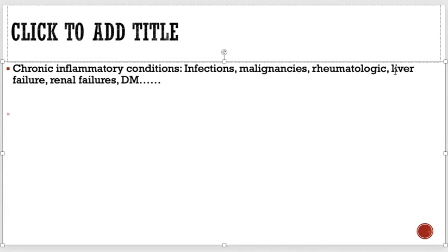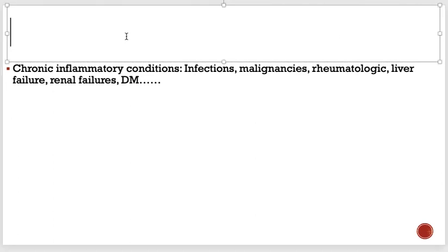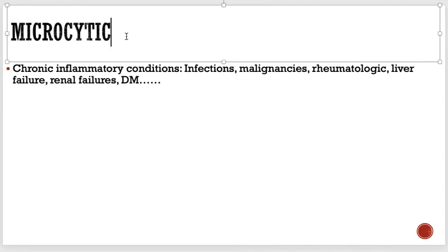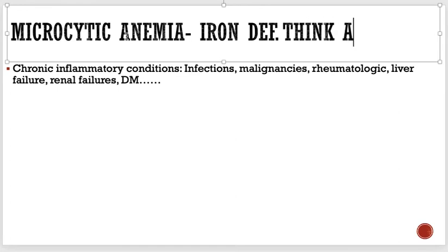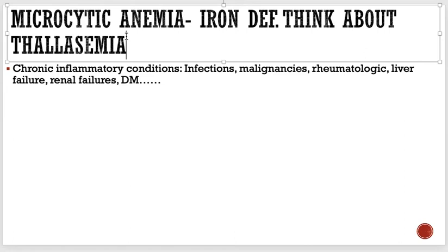Not all patients with anemia of chronic disease develop microcytic anemia — some develop normocytic anemia as well. So anemia of chronic disease can give microcytic as well as normocytic anemia. Remember: whenever there is microcytic anemia, the first thing in your mind should be iron deficiency anemia, and if iron studies come back normal, think about thalassemia. Anemia of chronic disease is less common but should be in your differential.